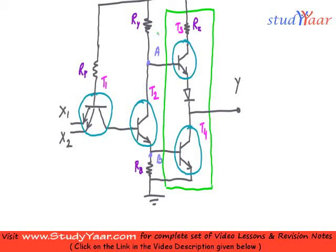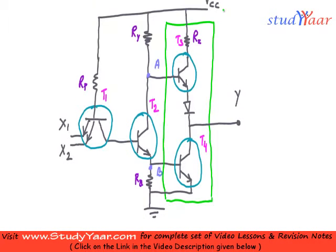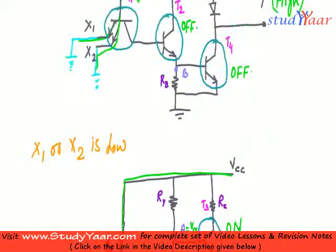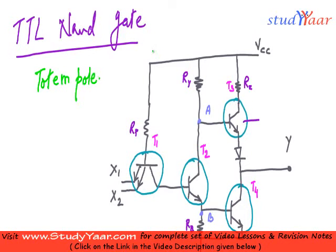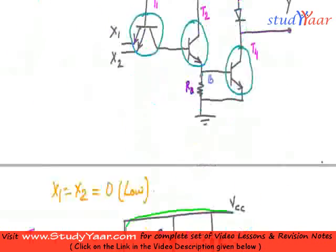Now let's look at this part of the circuit which is highlighted. This part is known as totem pole. Basically, this NAND gate which I have designed over here is a totem pole configuration NAND gate. We are going to see what is the significance of this totem pole NAND gate.